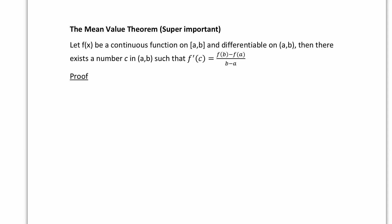So what does the mean value theorem say? Let's start with f(x), and let it be a continuous function on the closed interval a to b, and differentiable on the open interval a to b. If we have those two conditions, then there exists a number c in (a, b) such that f prime of c equals f(b) minus f(a) over b minus a. This is the algebraic version of saying that the slope of the secant line is equal to the slope of the tangent line at some point c in the interval.